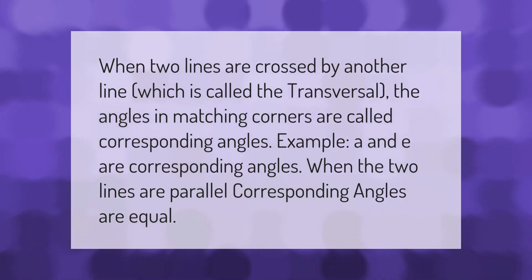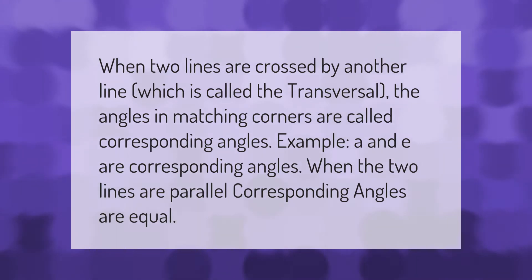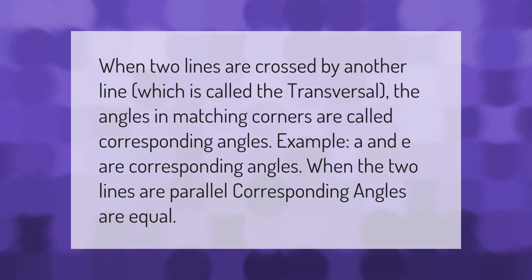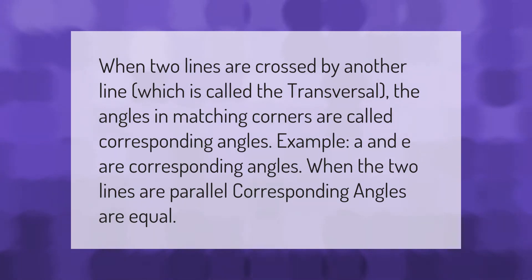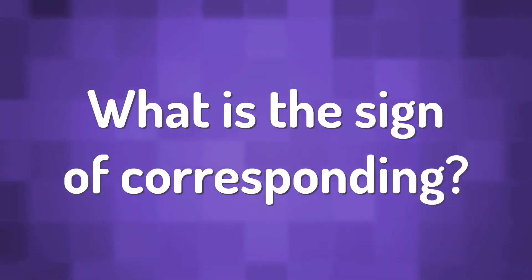When two lines are crossed by another line, which is called the transversal, the angles in matching corners are called corresponding angles. For example, i and e are corresponding angles. When the two lines are parallel, corresponding angles are equal.